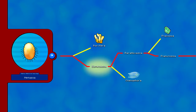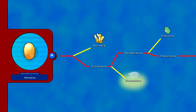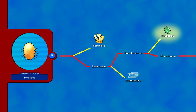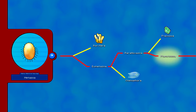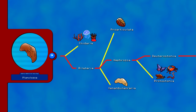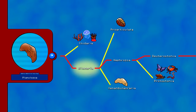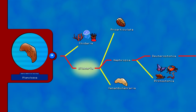Eumetazoa, or the diploblasts, split from Metazoa 700 million years ago, and branching off were Ctenophora, the comb jellies. The sister to Ctenophora, Parahoxazoa, split from the diploblasts 680 million years ago, then branched into Placozoa — very simple animals — and Planulozoa. At 560 million years ago, a major branch in animals occurred within Planulozoa: on one side is Cnidaria, the phylum that includes coral, jellyfish, and sea anemones; the other side is Bilateria, characterized by bilateral symmetry, meaning these animals had a clear front end and a back end.